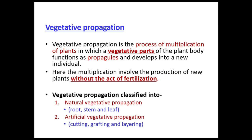Natural vegetative propagation occurs through root, stem, and leaf, whereas artificial vegetative propagation occurs through cutting, grafting, and layering.